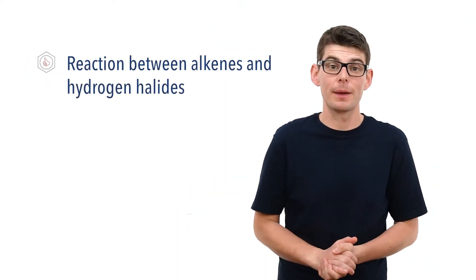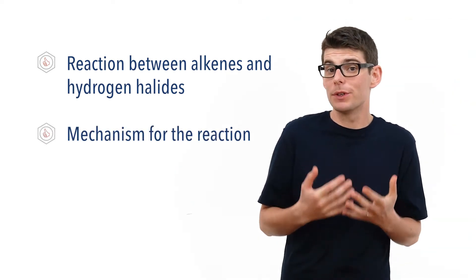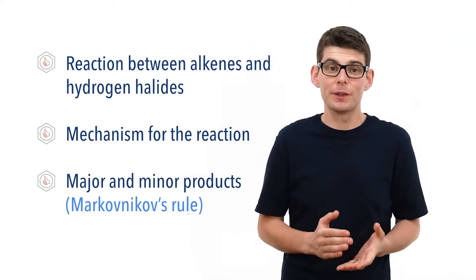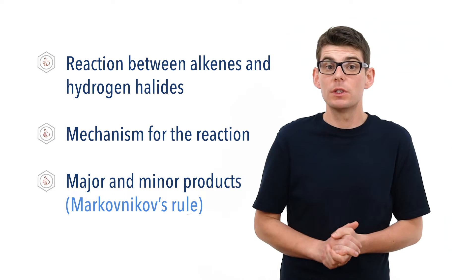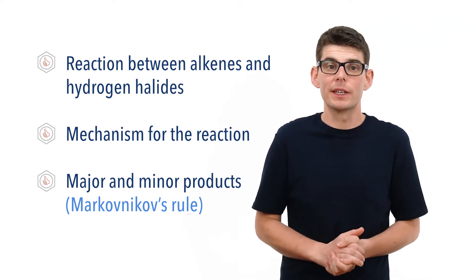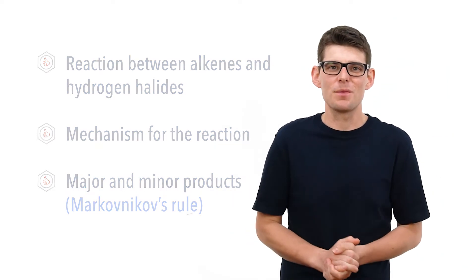Hello, Matt here from chemistrystudent.com. In this video we're going to look at the electrophilic addition reaction between an alkene and a hydrogen halide. We're going to talk about why and how this reaction happens, outline the reaction mechanism, and look at how we can predict the major and minor products of such reactions with unsymmetrical alkenes. Carbon-carbon double bonds and sigma and pi bonding, as well as other electrophilic addition reactions of alkenes, have been covered in separate videos. Check the links in the description below.